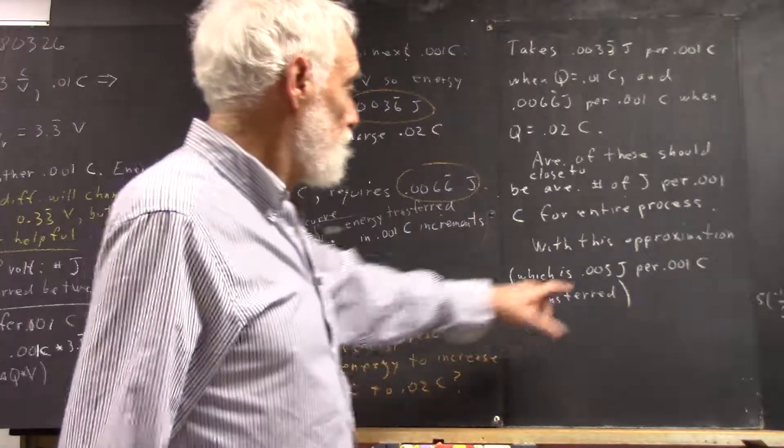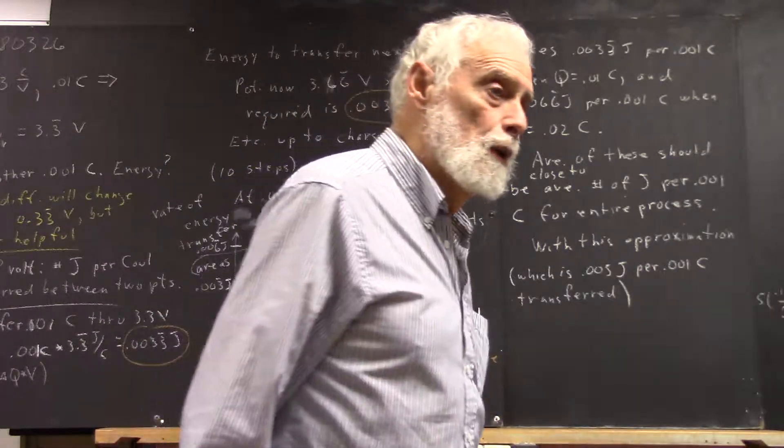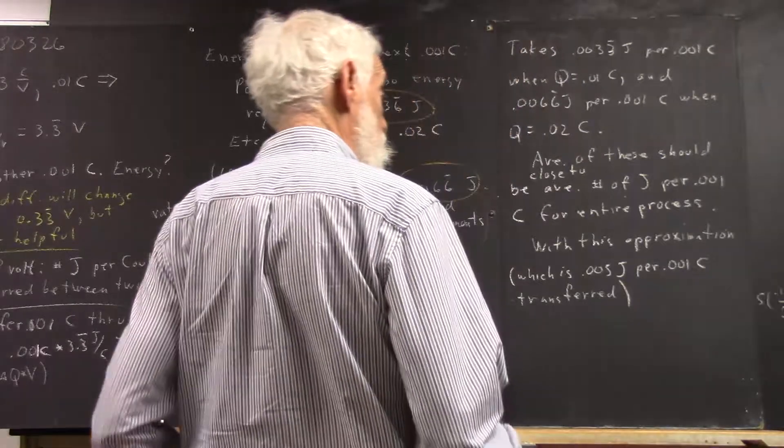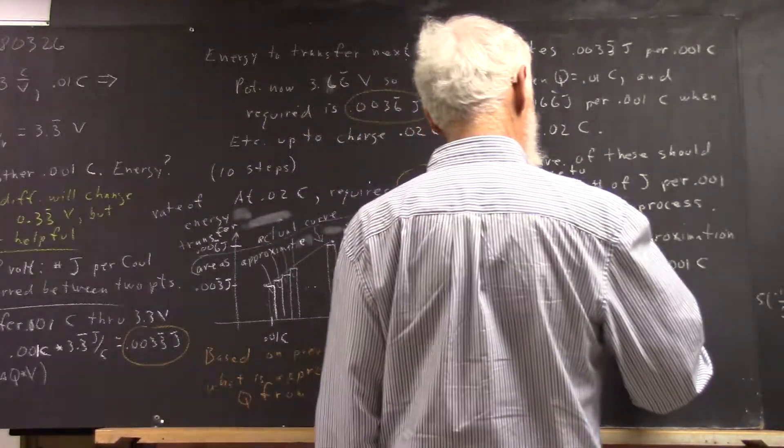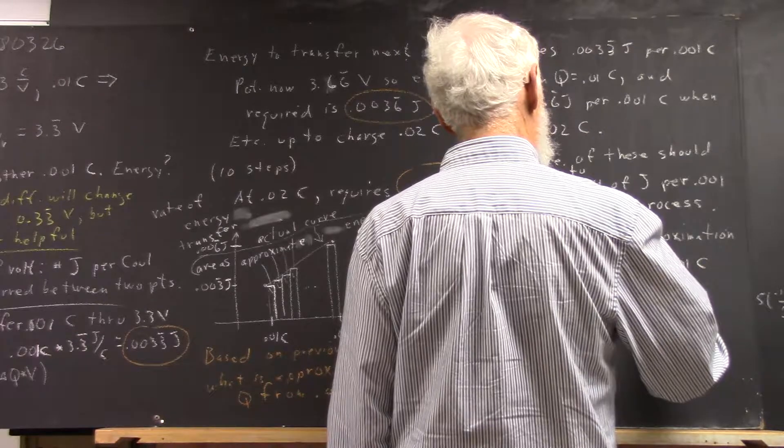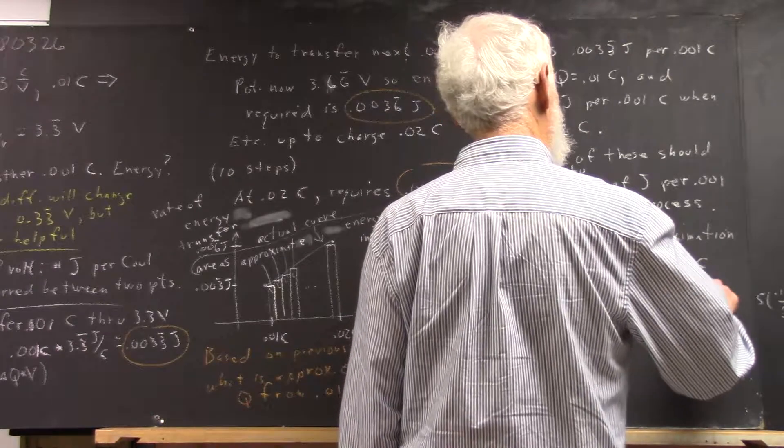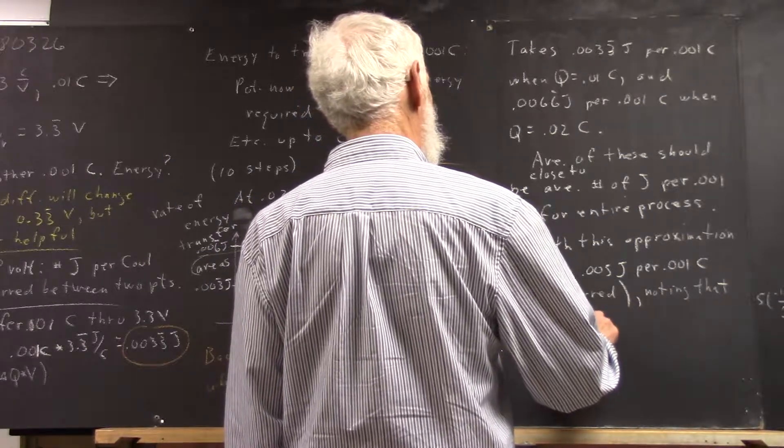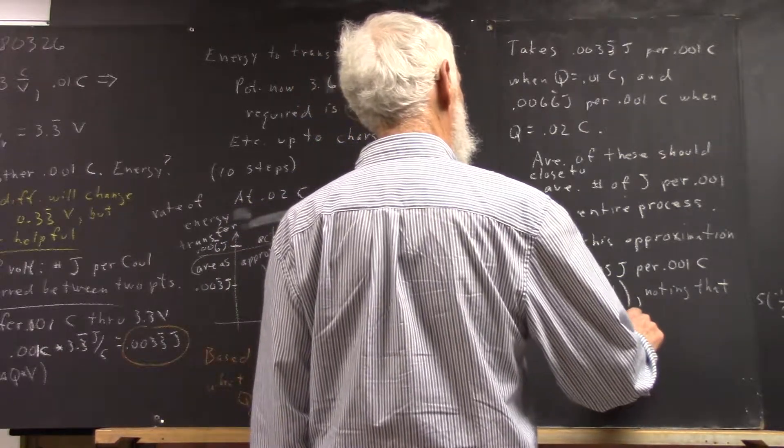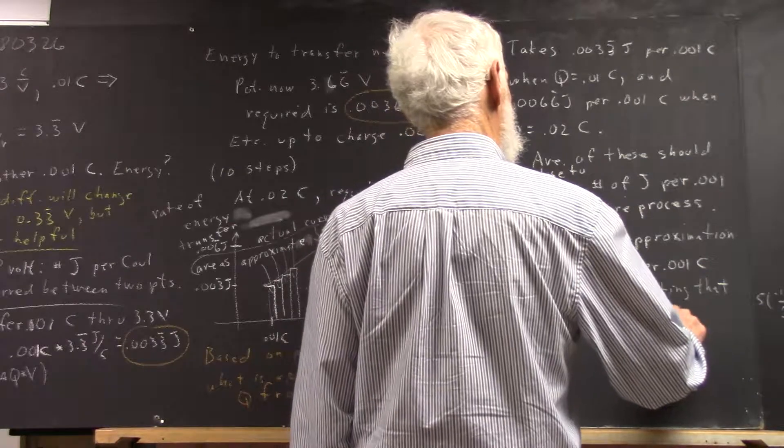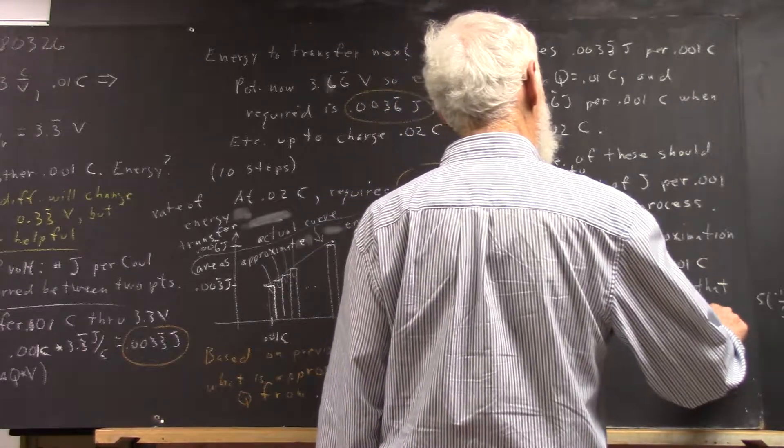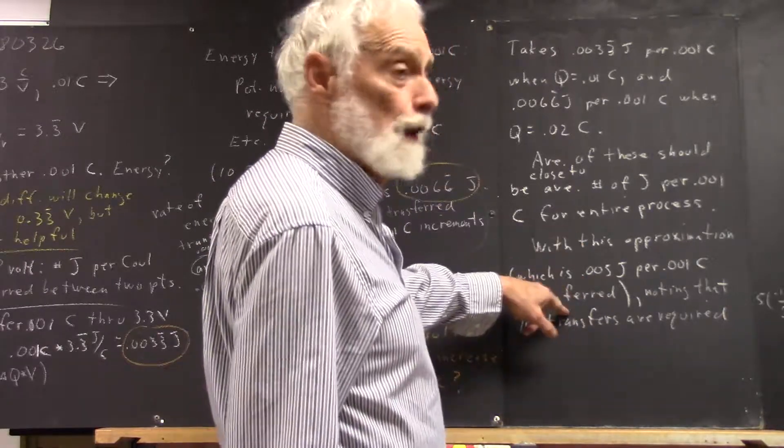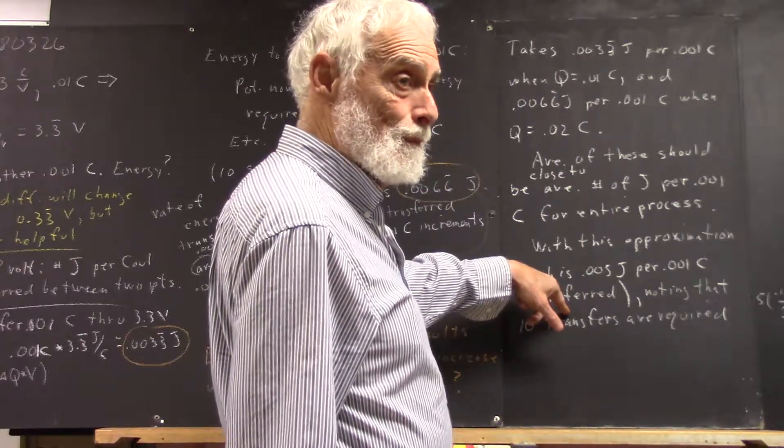and that is 0.005 joules per 0.001 coulomb transferred. Noting that 10 transfers are required, because this is joules per transfer.